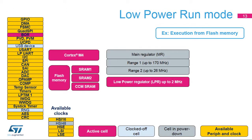In low-power run mode, the CPU is clocked and programs can be executed from flash or SRAM. Additionally, the flash can be completely unpowered to save power. The system clock is limited to 2 MHz. The main regulator is switched off and supply to digital blocks is provided by the low-power regulator. In low-power mode, all peripherals except the USB device and random number generator can be active.